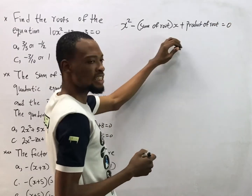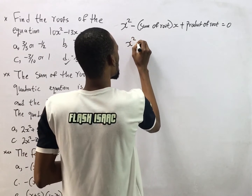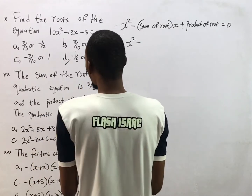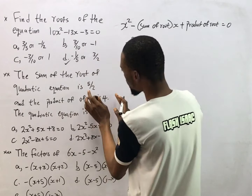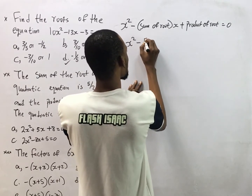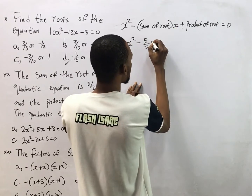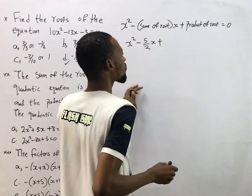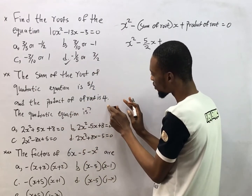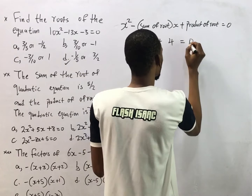Now that we know the formula, s squared remains, and we substitute the sum of roots, which is 5 over 2, and the product of roots, which is 4. So the equation becomes: s squared minus 5 over 2 times s plus 4 equals zero.